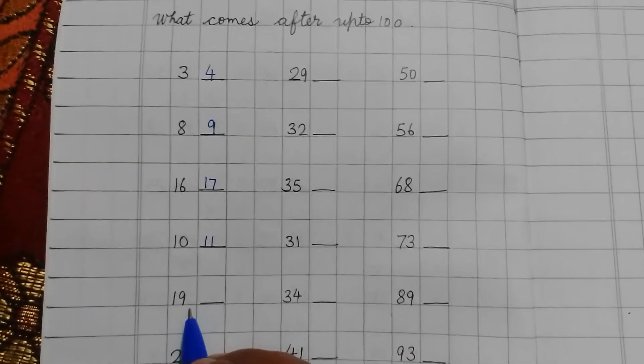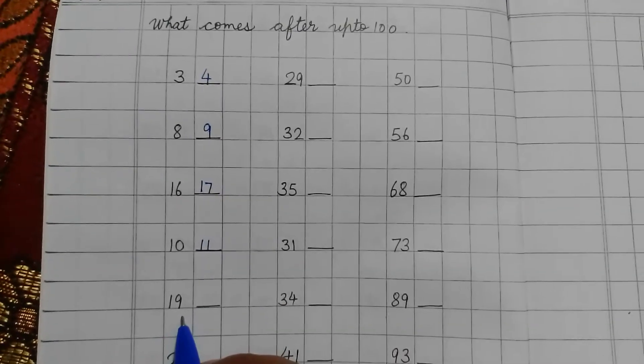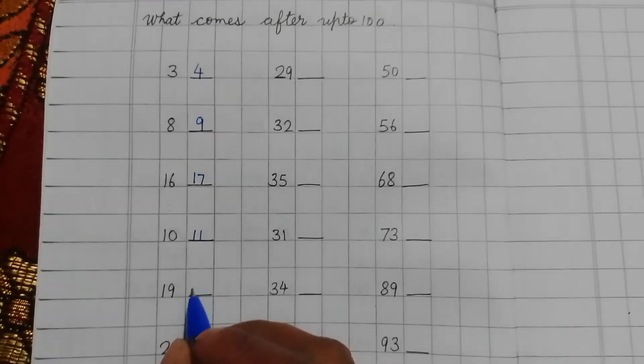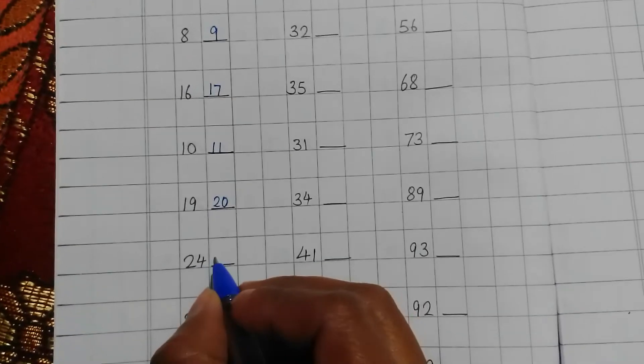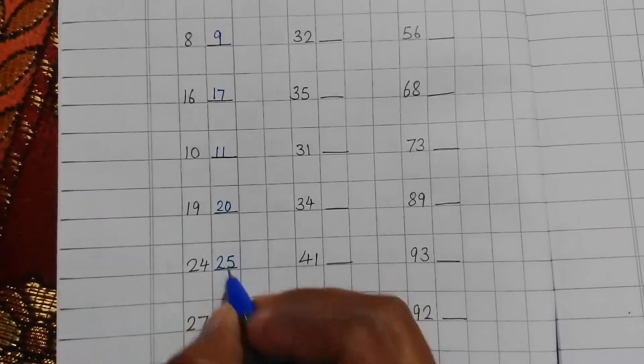This is 19. So 19. After 19, 20. 24. 25.